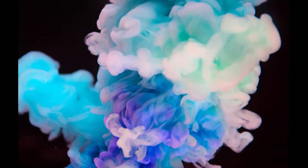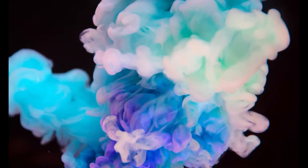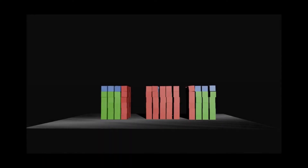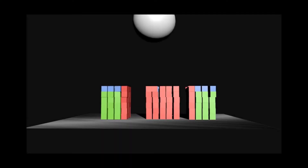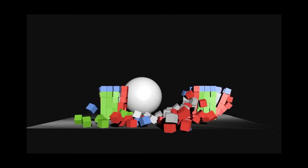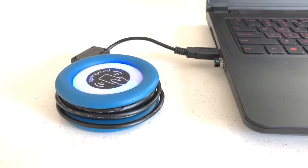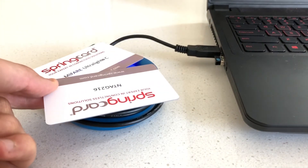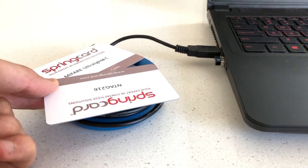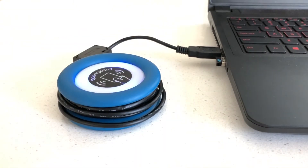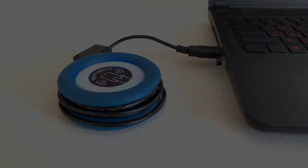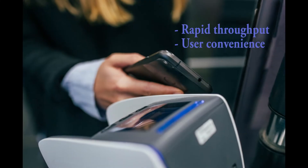To understand anti-collision, we first must define a collision. An RFID collision involves multiple cards crashing into each other within a reader's field. This crash doesn't need to be a physical touching of cards,